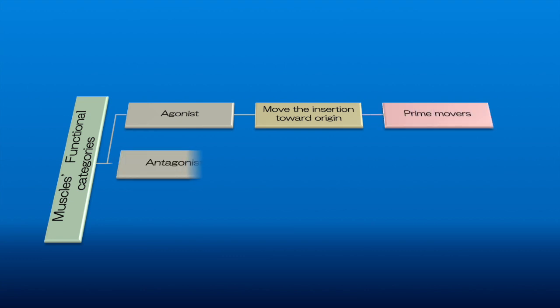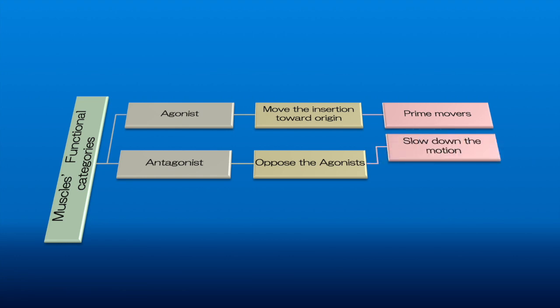Another group of muscles are antagonists that produce oppositely directed movement at the joint. Antagonists can slow down the motion and also return the limb to the initial position.